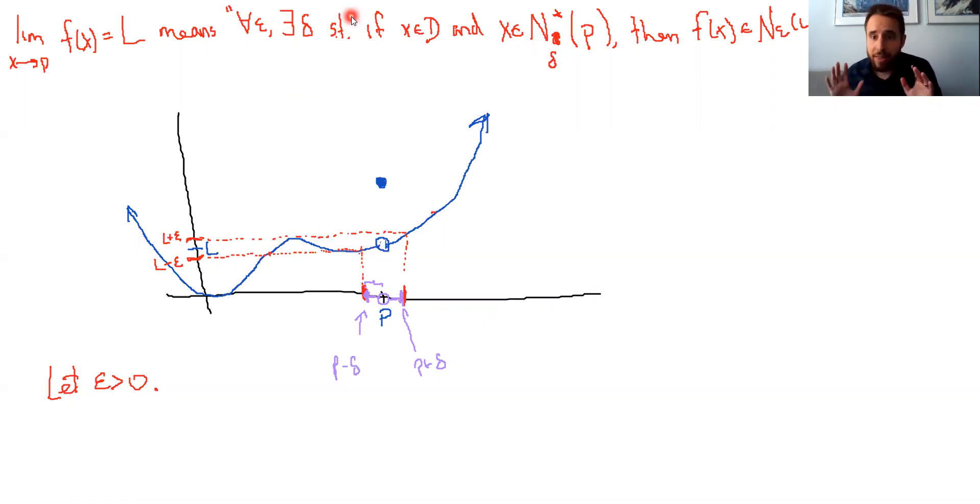So that is the idea behind this definition and sort of the associated picture that we might have in our head. No matter how tight we make this epsilon neighborhood, no matter how small we make epsilon, we should still be able to find an appropriate deleted delta neighborhood around P that maps entirely to the interior of that epsilon neighborhood.